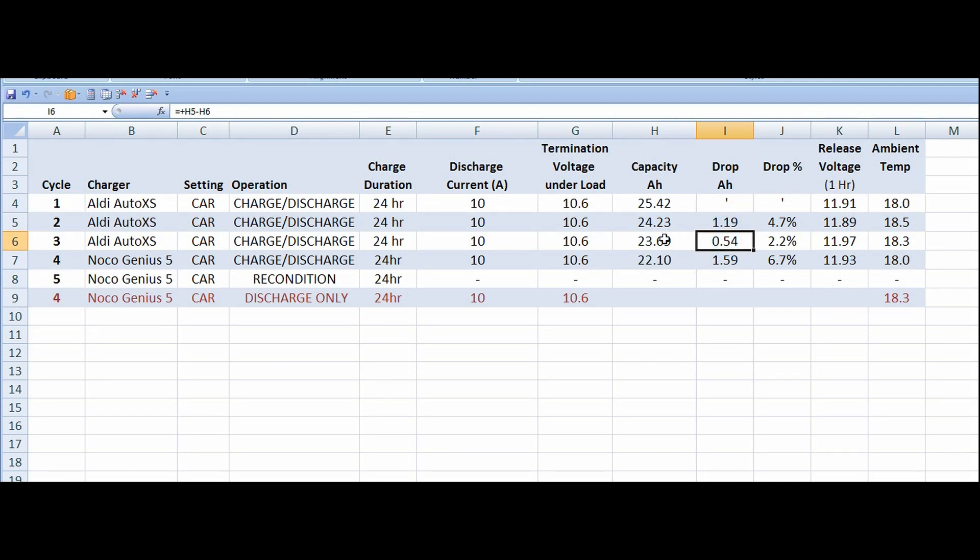At that point, after test three, test four was then charged with the NOCO Genius 5 and then discharged. And we got 22.1. So we had quite a big drop with the NOCO and it dropped by 6.7% in the capacity after we'd done the complete charge right until the green light had stopped flashing. It was connected to the charger 24 hours.